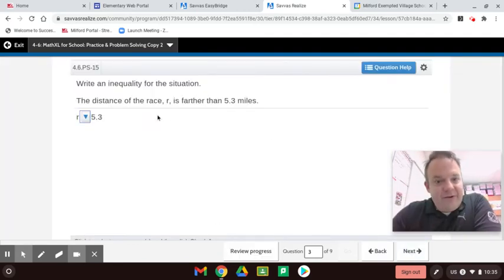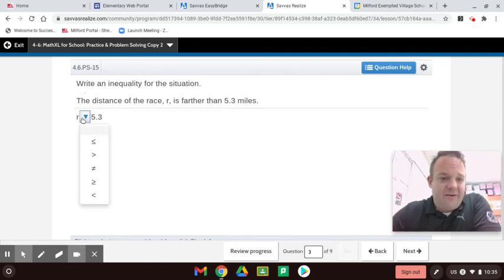The distance of the race, R, is farther than 5.3. That means it doesn't include 5.3. It's got to be greater than. So it's greater than 5.3.